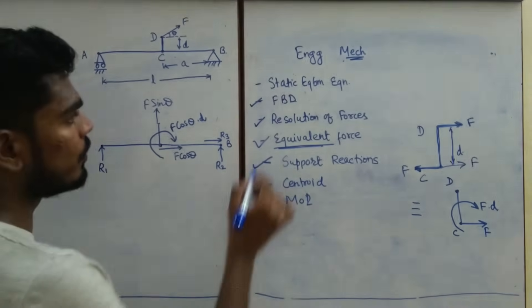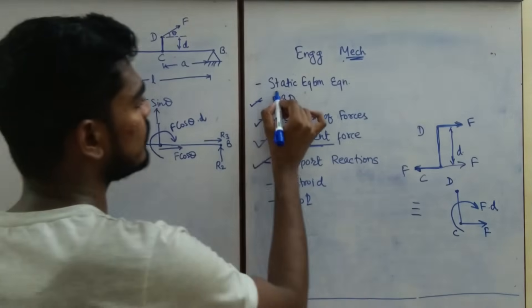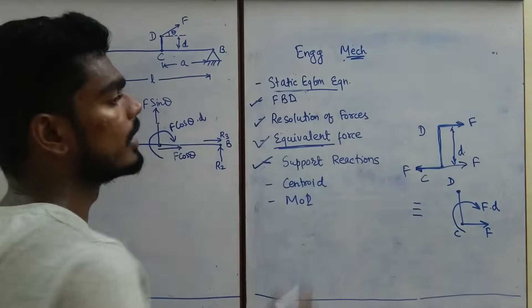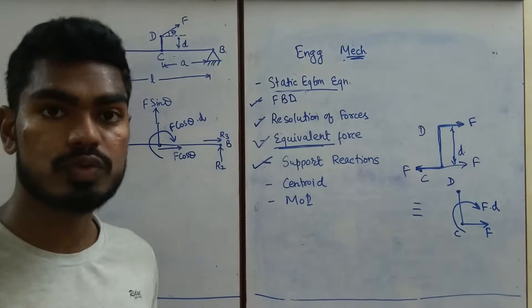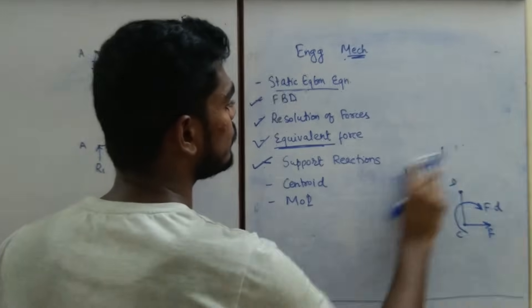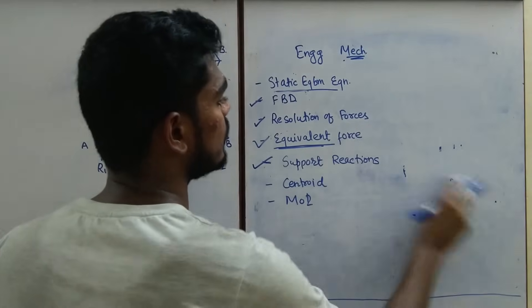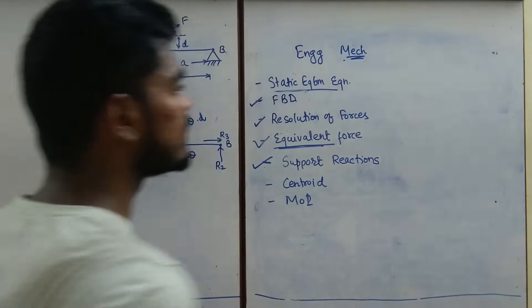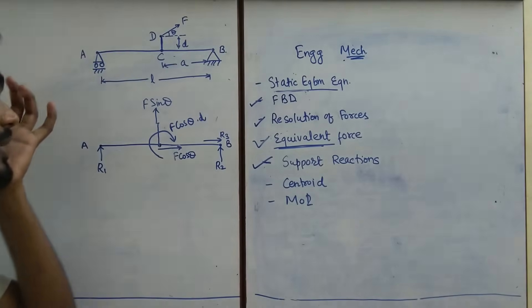Applying this to our beam: F sin theta remains as is, but F cos theta can be moved to the new point along with a clockwise moment of F cos theta × D, since the distance is D. That is how we calculate the equivalent force. Now we come to the final part — evaluating the reactions using the static equilibrium equation.